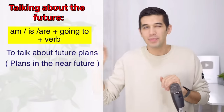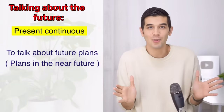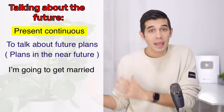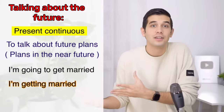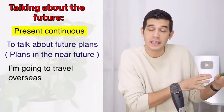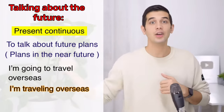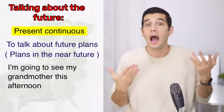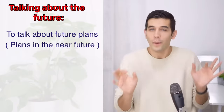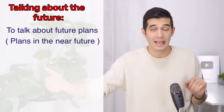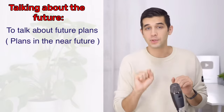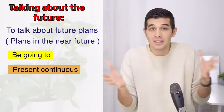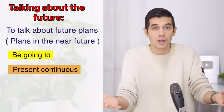Now pay attention — instead of be going to, we can also use present continuous to talk about our future plans. So instead of 'I am going to get married,' I can say 'I am getting married.' Instead of 'I am going to travel overseas,' I can say 'I am traveling overseas.' Instead of 'I am going to see my grandmother this afternoon,' I can say 'I am seeing my grandmother this afternoon.' So when you are talking about your future plans, you have two options: either use be going to or present continuous.